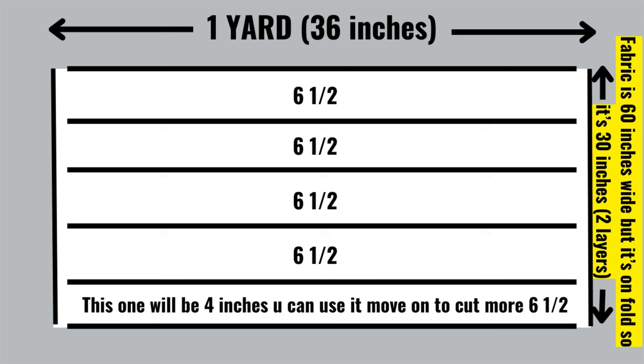One yard is 36 inches, so we need to make strips that are six and a half inches. I made this picture so you can understand it better. Each yard can make four strips, so six and a half times four equals 26 inches. As you can see, the last one is not six and a half inches—it's four inches, which is too short.